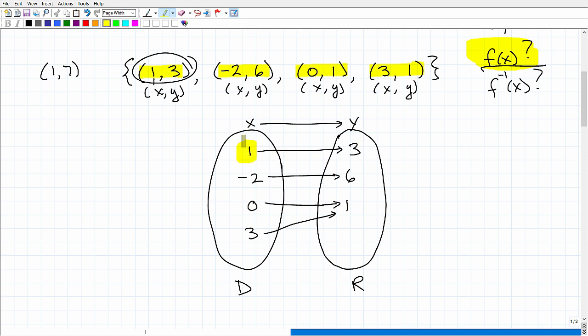So let's take a look here. So I have one, it maps only to three. Okay. So that's good. All right. So one is being mapped to only one Y point. Negative two is mapping to only one Y point. Okay. Zero is also mapping to one Y point.